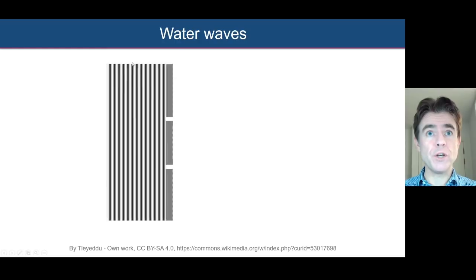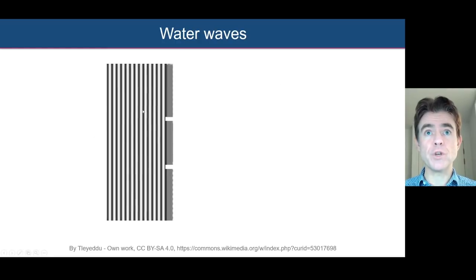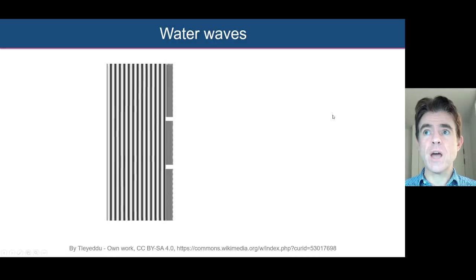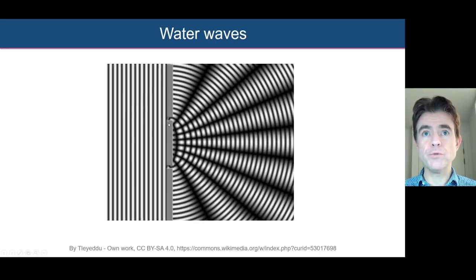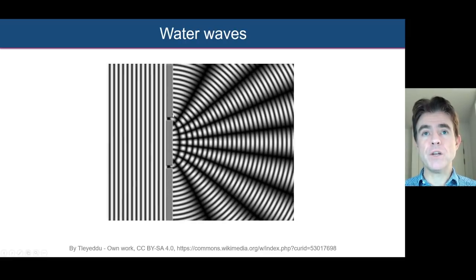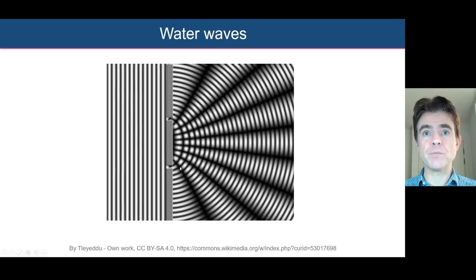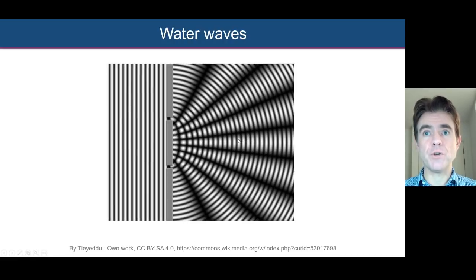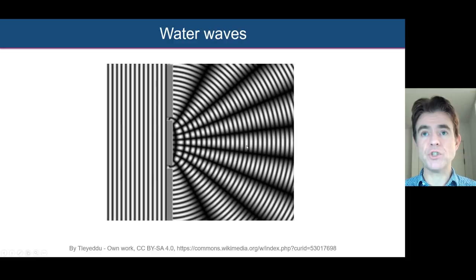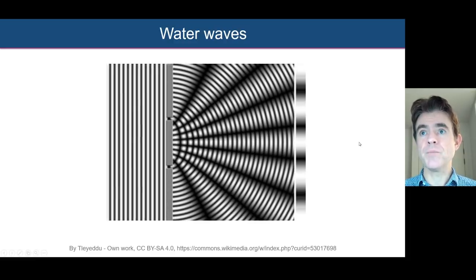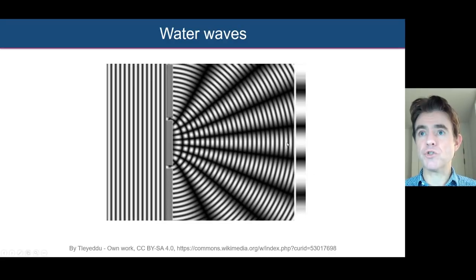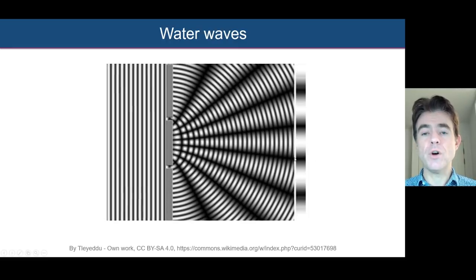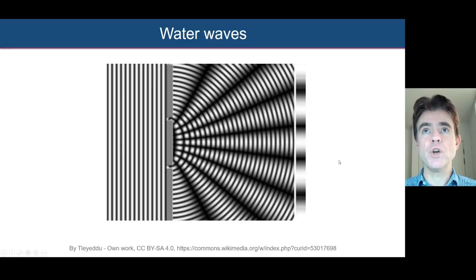We can imagine water waves on the left-hand side here — planar water waves approaching some kind of barrier or screen that has two holes or two slits in it. What happens is that when the water waves approach those two gaps, we get diffraction. We have two sources of water waves being emanated from those two slits, and we end up with constructive and destructive interference based on whether the troughs or the peaks coincide with each other. On the right-hand side, we notice constructive interference of peaks and destructive interference of troughs — that's why we end up with this interference pattern for water waves.